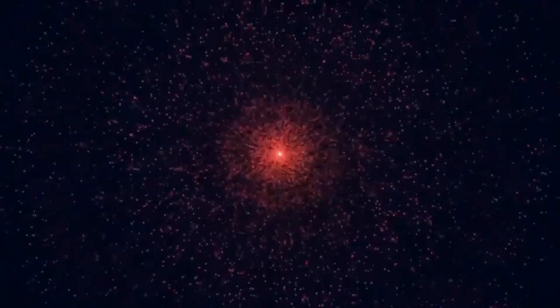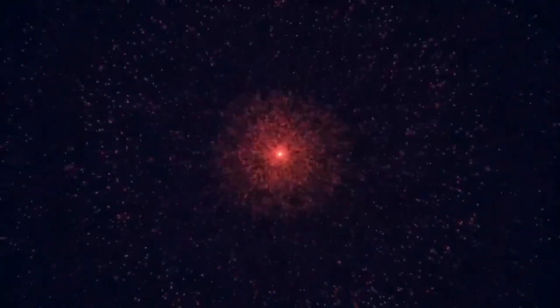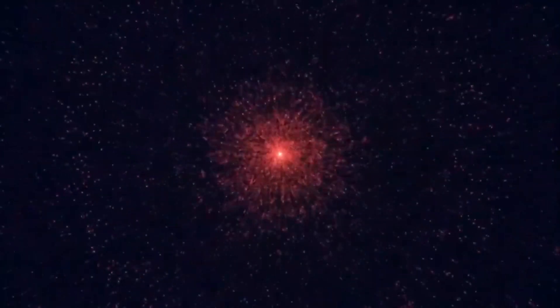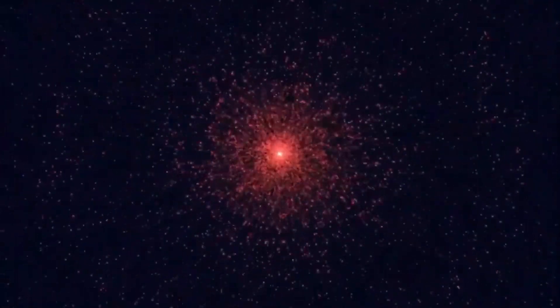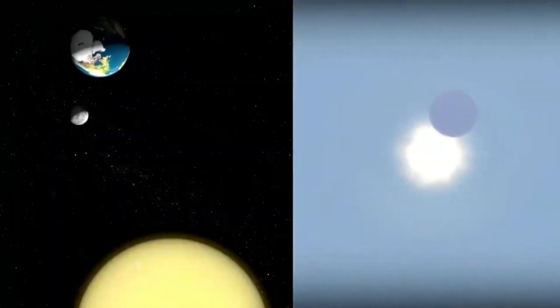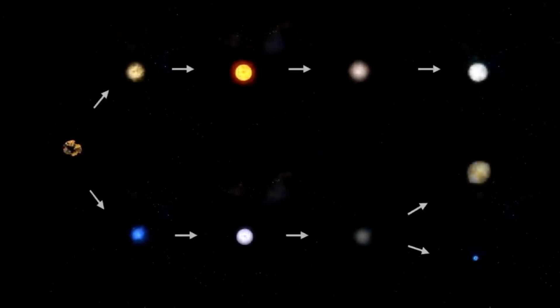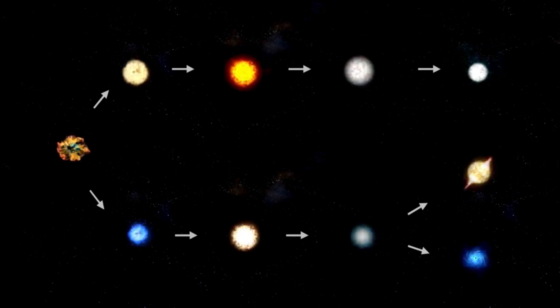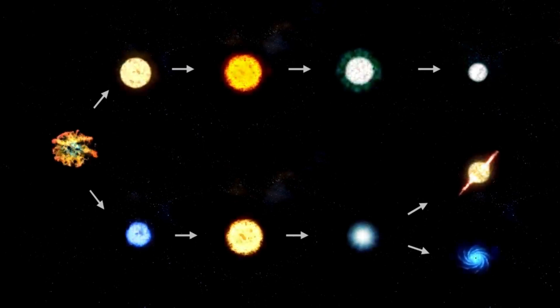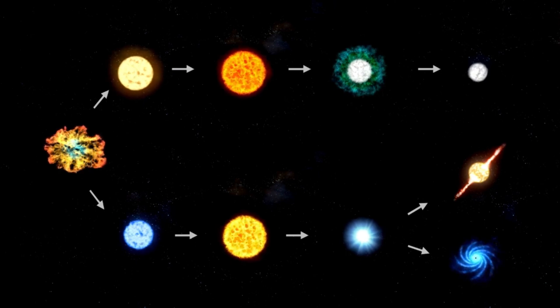Eventually, this star will undergo a collapse, resulting in a powerful supernova explosion, which may lead to the formation of either a neutron star or a black hole. The anticipation surrounding Betelgeuse's supernova stems from the fact that it will be an extraordinary event. Positioned roughly 650 light-years away, humanity finds itself in an optimal location to witness this cosmic spectacle firsthand.